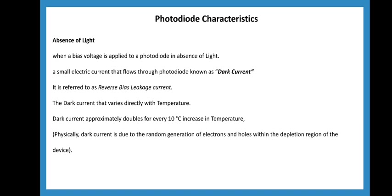Reverse bias leakage current: in reverse bias condition, there is a small current. This reverse bias leakage current is the dark current that varies directly with temperature. If the temperature of the diode increases, this dark current will also increase — approximately doubling for every 10 degree Celsius rise. For example, at 1 nanoampere, an increase in surrounding temperature causes the dark current to increase. In the absence of light, we have this dark current produced in the photodiode. Dark current is nothing but reverse bias leakage current.